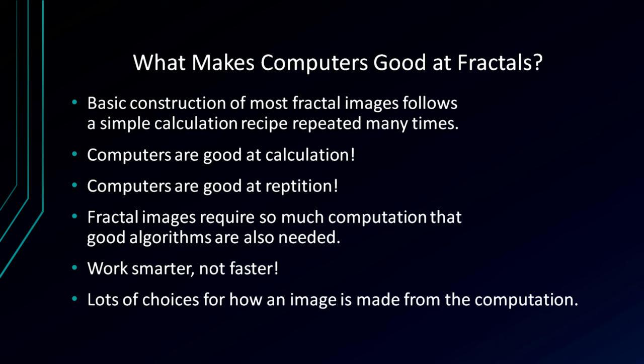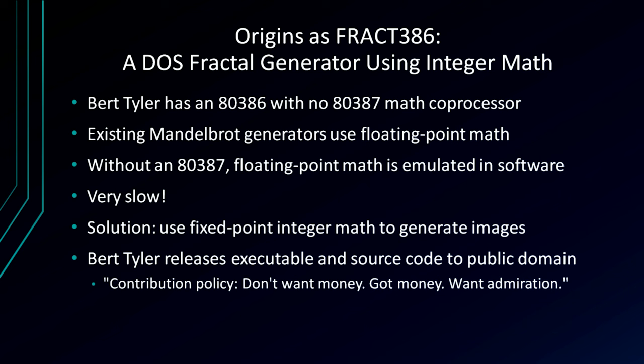The program started as Fract386, written by Bert Tyler. He had a PS/2 with no floating point accelerator. Most fractal programs at the time used floating point math and were very slow — I'm talking hours to generate an EGA-resolution image. To make it fun, you want it to be fast so you can play with variations and see what comes out. So he rewrote the algorithm using fixed-point integer math, the fastest math his machine could do, and released a program called Fract386.